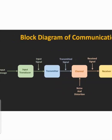In the transmitter, there are a number of blocks present: oscillator, modulator, and transmitting antenna. The oscillator will generate different frequencies or carrier signals for the modulation process. The modulator will modulate our information signal with the help of the carrier signal generated from the oscillator.